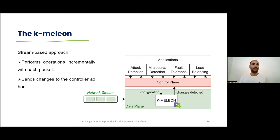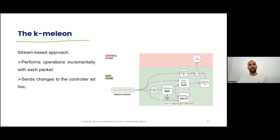So we built Chameleon, that is a stream-based approach, which is able to run online and inside the switch. And to do this, it performs the operations incrementally, instead of all at the end of each epoch. And then it only sends the changes to the controller ad hoc. And these changes are like a flow key, or some kind of data that identifies where did the change happen. And then this information can be used by a wider array of applications, such as attack detection, microburst detection, fault tolerance, or even load balancing.